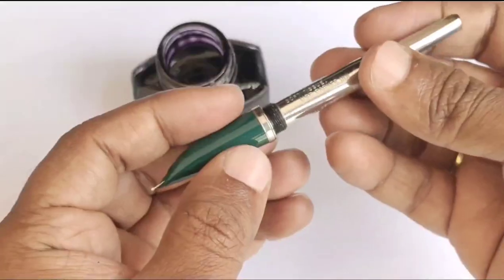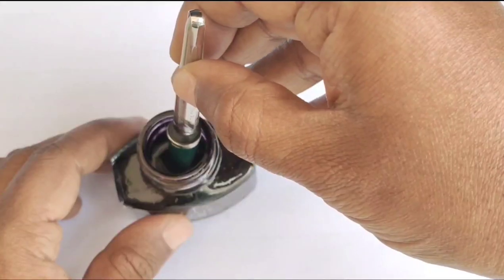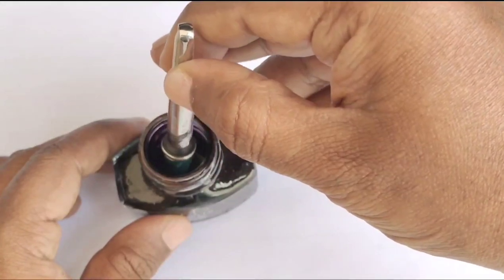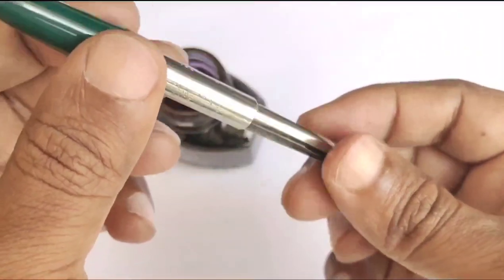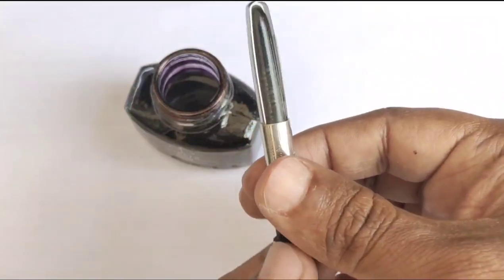Now I am filling both the pens with Parker Quink. Since the sac is not covered with any metal, we can see the ink levels easily.